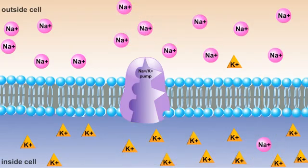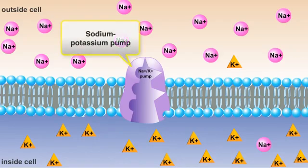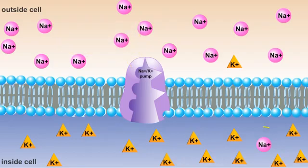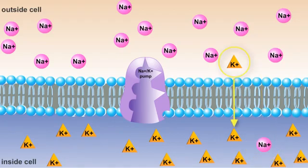One of the more common examples of active transport is the sodium-potassium pump. The job of the sodium-potassium pump is to move sodium ions, or Na+, out of the cell and potassium ions, or K+, into the cell. Let's take a closer look at how this happens.